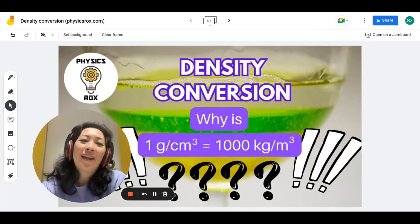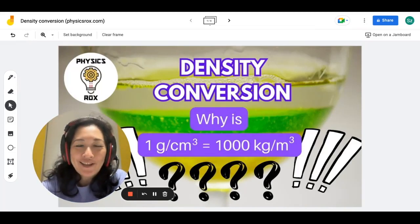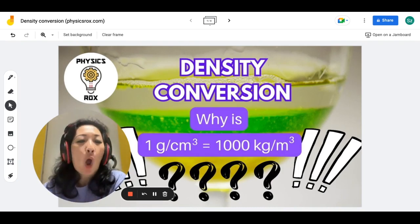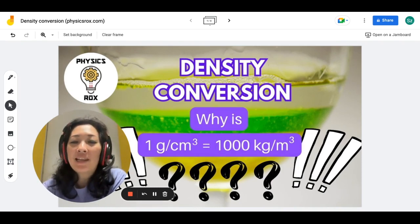Hey everyone! I'm Ms. Hu, your physics teacher. In this video, I am going to go through density conversion and explain to you why 1 gram per cm³ is equal to 1,000 kilograms per meter cube.